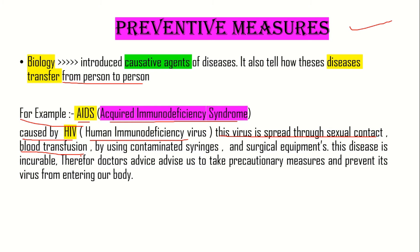HIV also spreads by using contaminated syringes from one person to another person. Contaminated syringes used to enter vaccines or drugs into the body can transmit the virus.